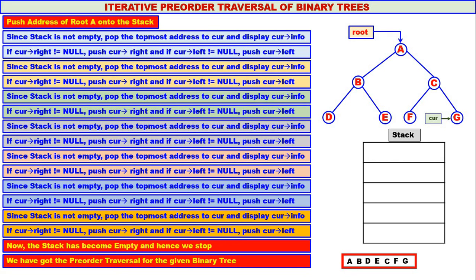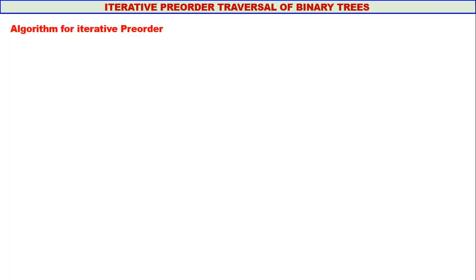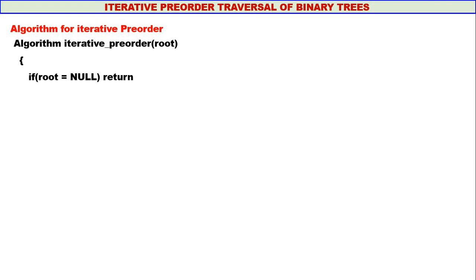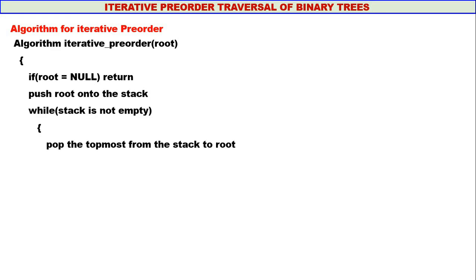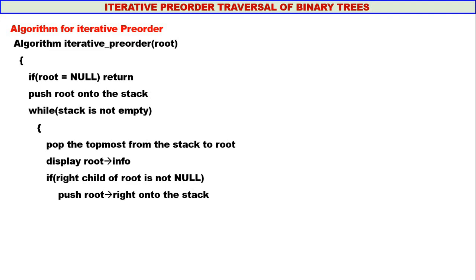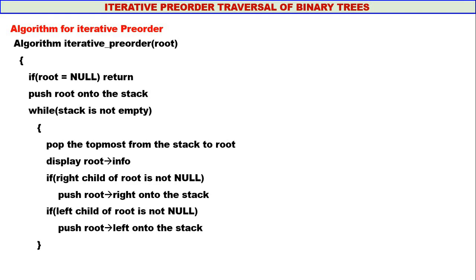I think iterative pre-order is quite simple. Now let us go to the algorithm. If root is null, return. Push root onto the stack. While the stack is not empty, pop the topmost element to root, display root's info. If the right child of root is not null, push root's right. If the left child of root is not null, push root's left. Continue until the stack becomes empty.